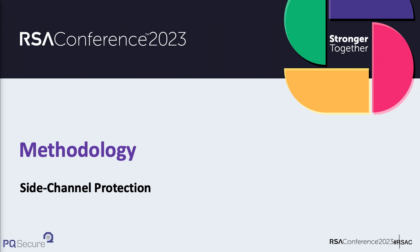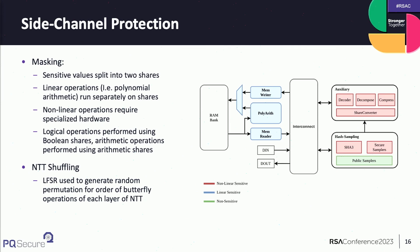For side-channel protection, domain-oriented masking is used: sensitive values are split into two shares, operated on independently for linear operations, and DOM AND gates with randomness refresh masks for nonlinear operations. The goal is to operate in the domain most linear with respect to the operations. For hashing and sampling we use Boolean masking; for polynomial arithmetic we use arithmetic masking so addition and multiplication can be performed linearly on the two shares. The difficulty is converting between domains: Boolean-to-arithmetic and arithmetic-to-Boolean converters are large and expensive modules, adding significant area and performance overhead.